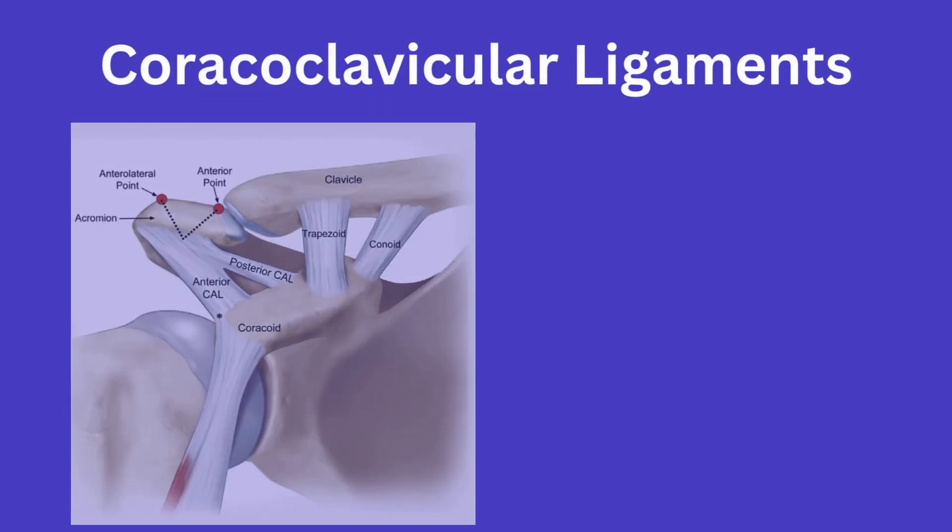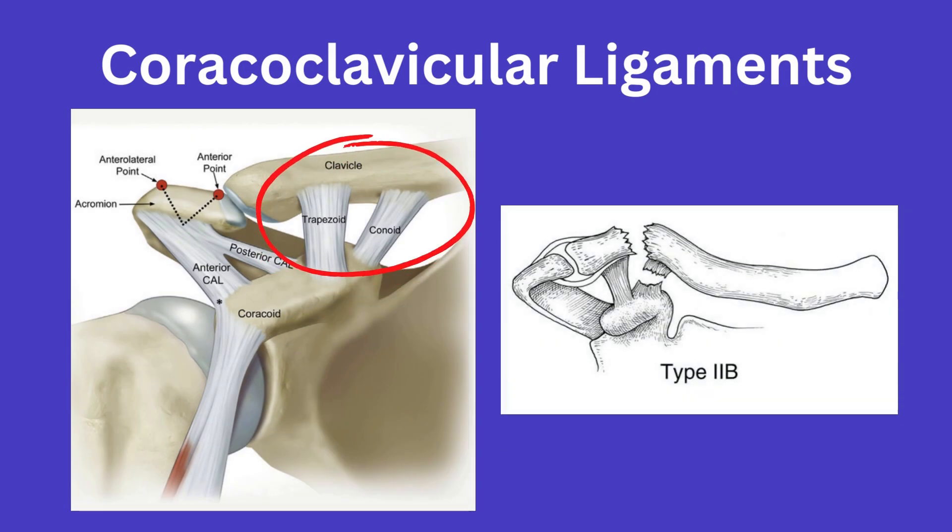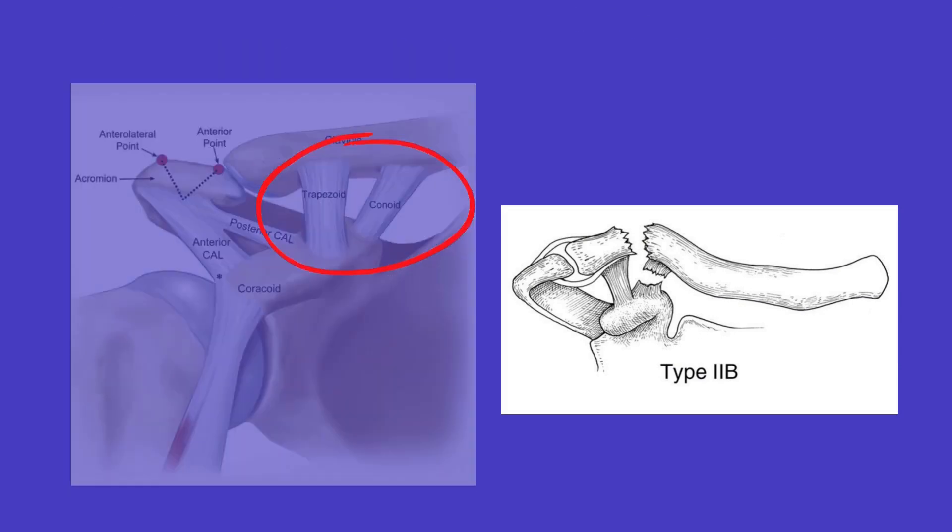Just to review those ligaments, these include the conoid and trapezoid ligaments seen here. Note the conoid is medial, and that Type 2B typically involves a conoid ligament rupture.